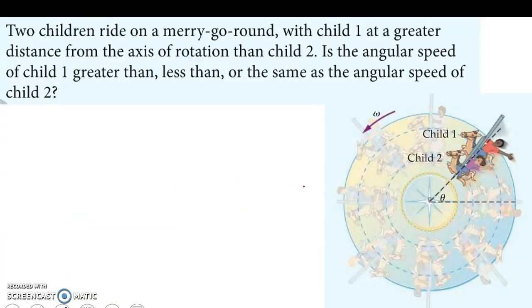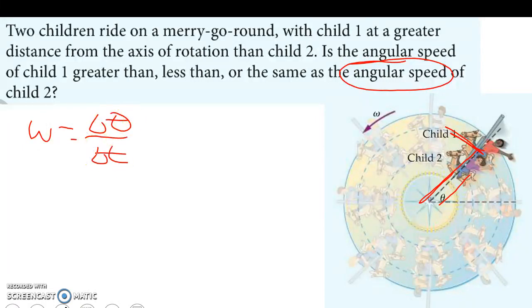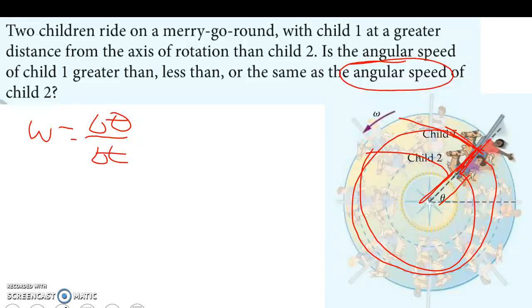Here's two children on a merry-go-round. Child 1 is at a greater distance than child 2, so the radius is greater. Is the angular speed of child 1 greater than, less than, or the same as the angular speed of child 2? We're talking about angular speed. If you look at the angular speed equation, it's change in angle over change in time. Their angle's the same, and if they're revolving at the same distance, they're going to stay right here the whole way. Their change in angle's always going to be over the same change in time. So angular speed is going to be the same.